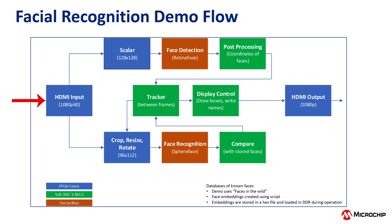Each frame gets resized by the scalar to a pixel array size that RetinaFace accepts. Coordinates of face locations are passed to the post-processing block for further adjustments.